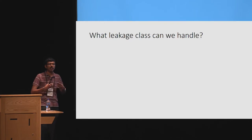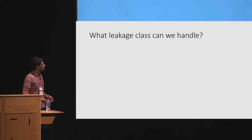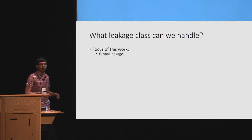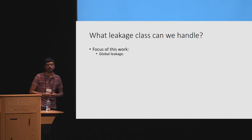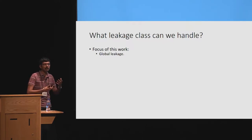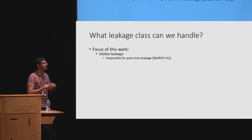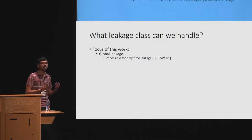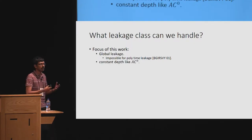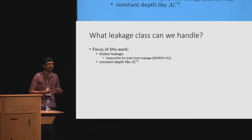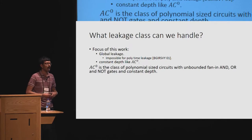The next question is: what classes of leakage functions can we protect against? In this work, we focus on global leakage functions — meaning the leakage function can view all the wires of C-hat. Ideally we would like to protect against arbitrary polynomial-time leakage. However, given global leakage, it follows from seminal works on the impossibility of program obfuscation that if we allow leakage functions to be arbitrary polynomial-time, there is no hope of any security. To circumvent this impossibility result, we restrict the classes of leakage. In this work, we restrict them to have constant depth, somewhat like AC0 circuits. AC0 is the class of polynomial-sized circuits with unbounded fan-in AND and NOT gates, and the circuits have constant depth.